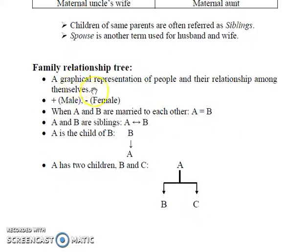In this video, we are going to use plus as a symbol for male and minus as a symbol for female. This double arrow symbol denotes that A and B are siblings, and to denote that A is the child of B, we use this downward arrow symbol.